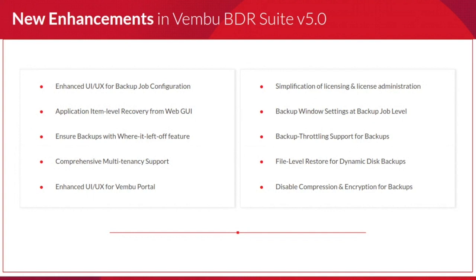Backup Window settings — previously an enterprise-class feature — are now available for all users in Rainbow. You can restrict backup jobs to run within a particular time window. Initially this was global-level only; now it is available at the individual backup job level as well. Backup throttling support is also available for all backups on a preferred network to avoid traffic in your networking.